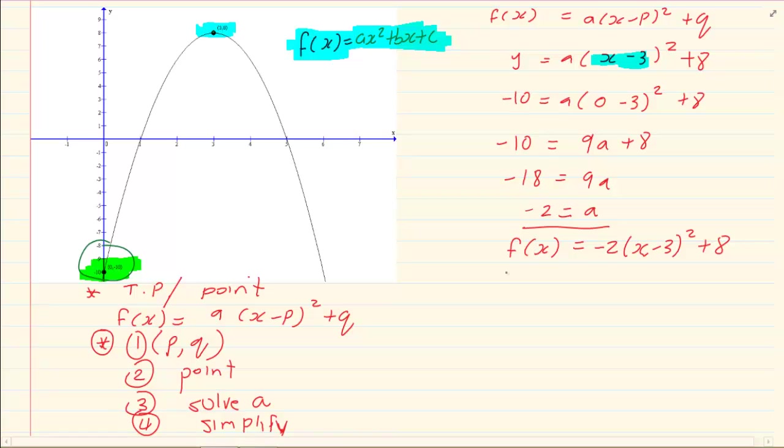So it just means get rid of the brackets. So we'd have f(x) = -2(x² - 6x + 9). You should know how to do the simplifying is done in grade 10. If you're not familiar with this, you need to go back and learn your simplifying before continuing.